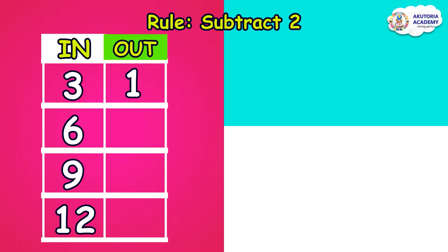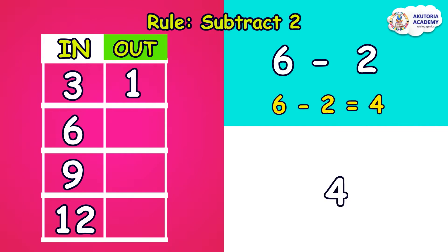The second number is six. The rule says subtract two, so six minus two equals four. We place our answer, four, just beside six in the input and output table.